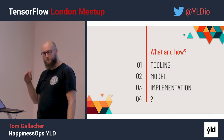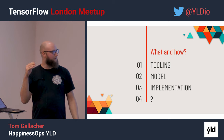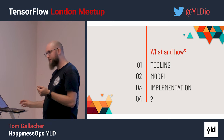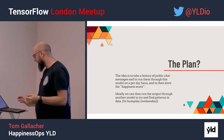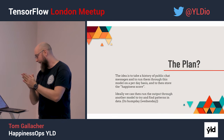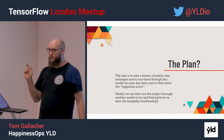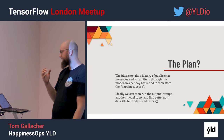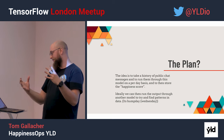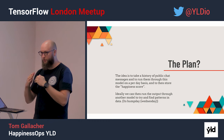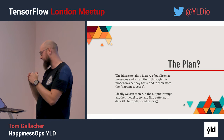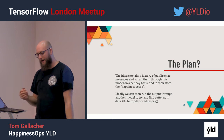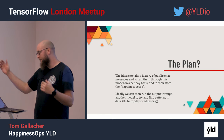So — happiness. I'm going to talk through some tooling, the model I'm creating, the implementation, and then possible next steps. The idea is to take a history of public messages, run them through my model, and basically score happiness in chat as time progresses throughout history.